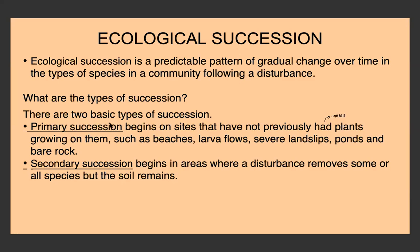The first type is primary succession, where there were no species before — sites that have not previously had plants growing on them, places like beaches, lava flows, severe landslips, ponds, and bare rock — where there was no soil, so no plants could grow. Secondary succession begins in areas where there's a disturbance that removes some or all of the species, but there's still soil remaining.